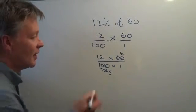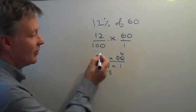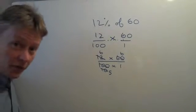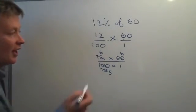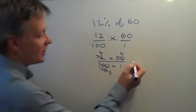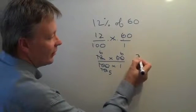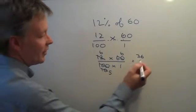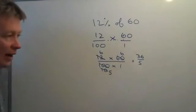It doesn't really matter. But just for this, I'll divide that by 2 so it becomes 6. So my fraction now is 6 times 6 which is 36 divided by 5 times 1 which is 5.